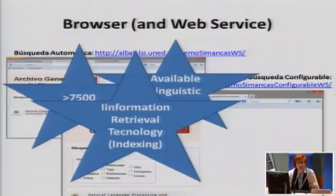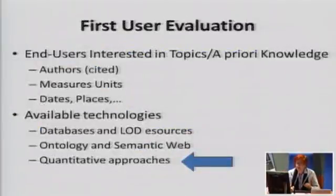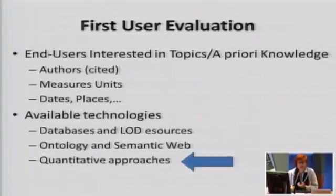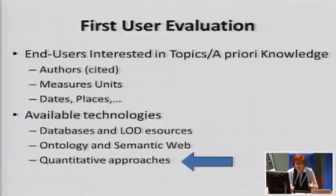Using information retrieval technology to index these cards, we tried to do a Google-like search. Then we made the user evaluation with the historians, and they said this Google-like search works well on our own corpus, but we need things about measures, authors, dates, places, and so on.